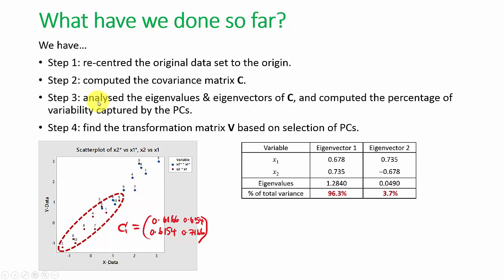At step 3, we analyzed the eigenvalues and eigenvectors of the covariance matrix C, and we also computed the percentage of variability captured by the principal components. The first principal component captured 96.3% of the total variance, whereas the second principal component, PC2, captured only 3.7% of the total variance.